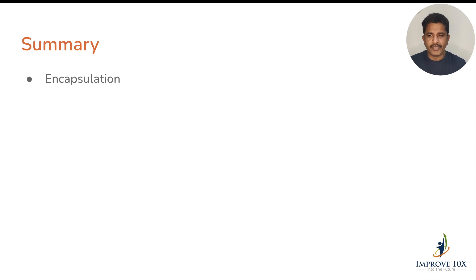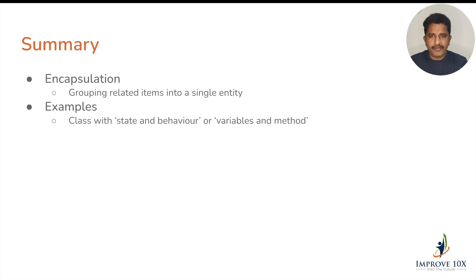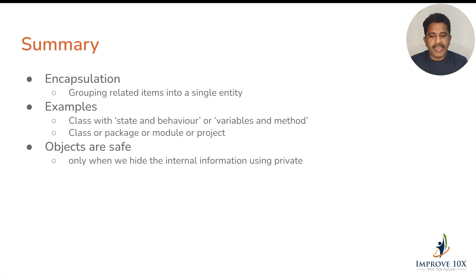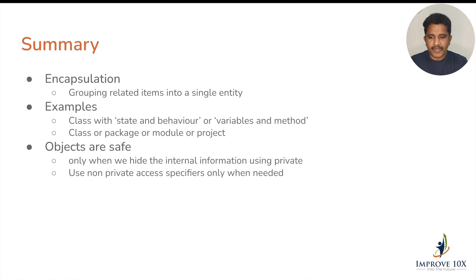Let us do a summary. First, encapsulation is grouping related items into a single entity. A class is an encapsulated entity which is a combination of state and behavior — variables and methods. Similarly, class, package, module, and project are all encapsulated entities. Objects are safe only when we hide the internal information using private — no one should be able to identify variable names or how data is stored, and everything should be accessed only through methods with meaningful names. Use non-private access specifiers only when needed.